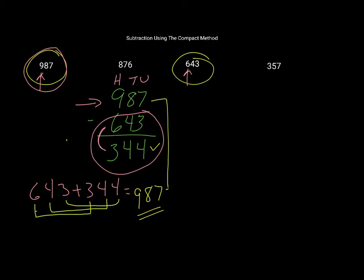That's that one. So now I will try the next pair of numbers, which is 876 and 357. Now I have to decide which of those two numbers is going to go on top. Again, I'm looking at the hundreds digit there and there. Here I've got 300, here I've got 800. Well, clearly 800 is more than 300, so this number 876 is going to go on top.